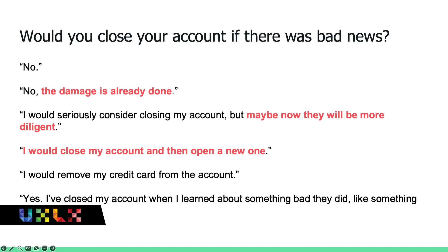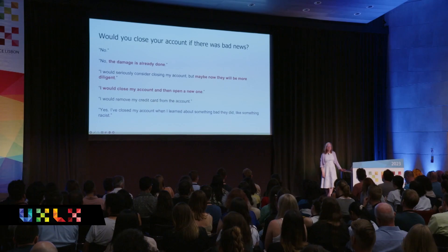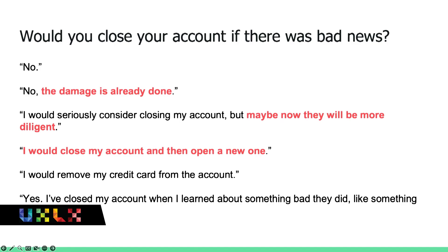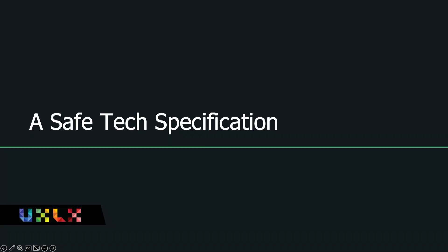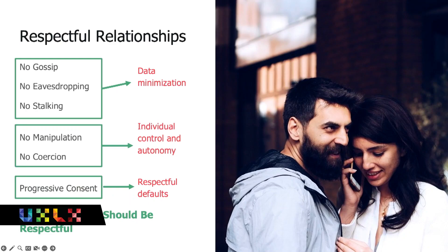Even faced with bad information about a company, people will still continue to use the product. They might assume the company is going to be better now because they got a spanking — and it doesn't always happen. The Safe Tech Specification is basically mapping human relationship verbs — eavesdropping, gossip, manipulation — to actions we can take as organizations in our product development.